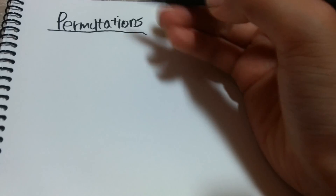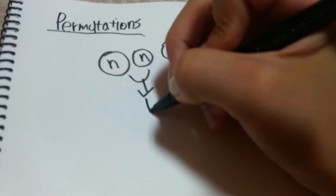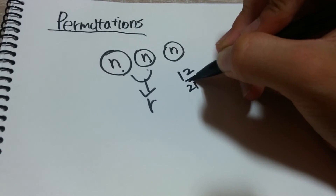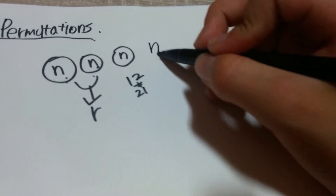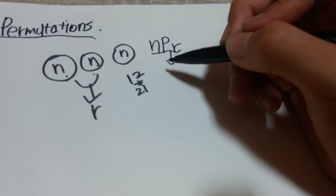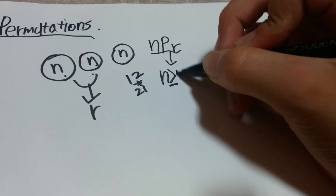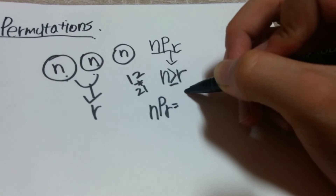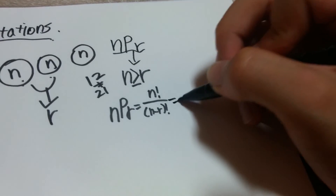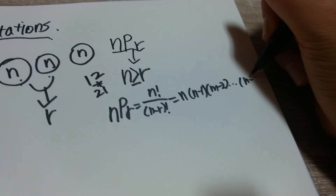Permutations are really simple. You have N objects and you're going to pick R of them, but there is an order between them — so 1,2 and 2,1 are different things. You write this as nPr, and you need N to be bigger than or equal to R. The formula is nPr = N! / (N-R)!, which equals N × (N-1) × (N-2) × ... × (N-R+1).